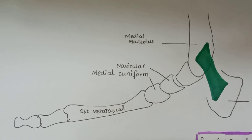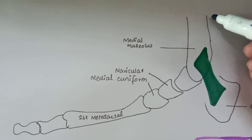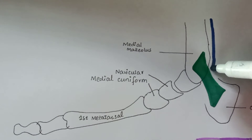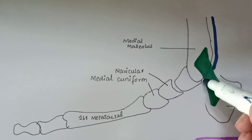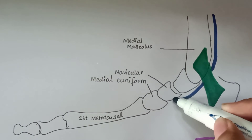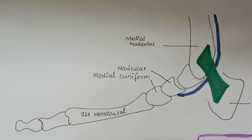The first tendon is the tendon of tibialis posterior, which gets inserted into the navicular. This is the tendon of tibialis posterior, which gets inserted into the navicular.